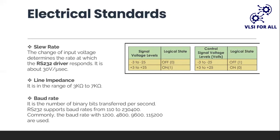The slew rate — the change of input voltage — determines the rate at which the RS-232 driver responds. The RS-232 standard maintains a minimum slew rate of 30 volts per microsecond. The line impedance between the RS-232 driver and the receiver is defined such that the maximum voltage transfer between the transmitter and receiver is in the range of 3 kilohms to 7 kilohms.